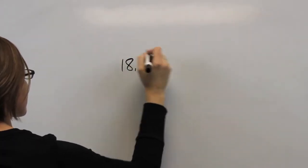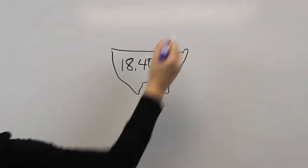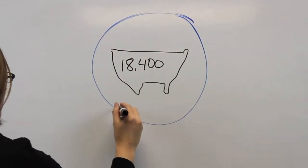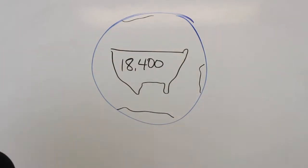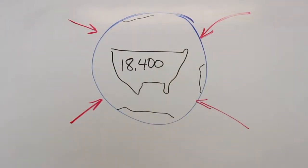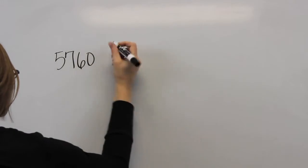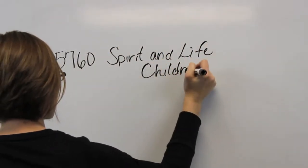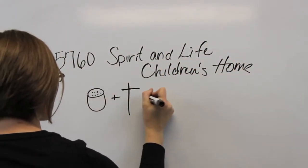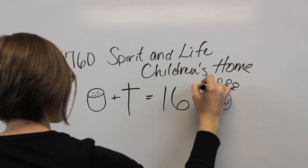$18,400 has been sent to support missionaries and ministers throughout the U.S. and around the world. Our people and our dollars are now having a real impact in Costa Rica, Mexico, the Philippines, and Thailand. $5,760 has been given to Spirit and Life Children's Home to provide life-giving nourishment and spiritual sustenance for 16 orphans in the northern Philippines.